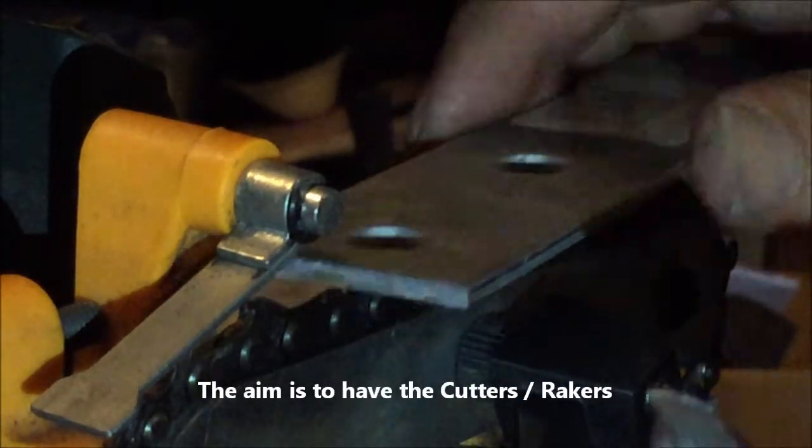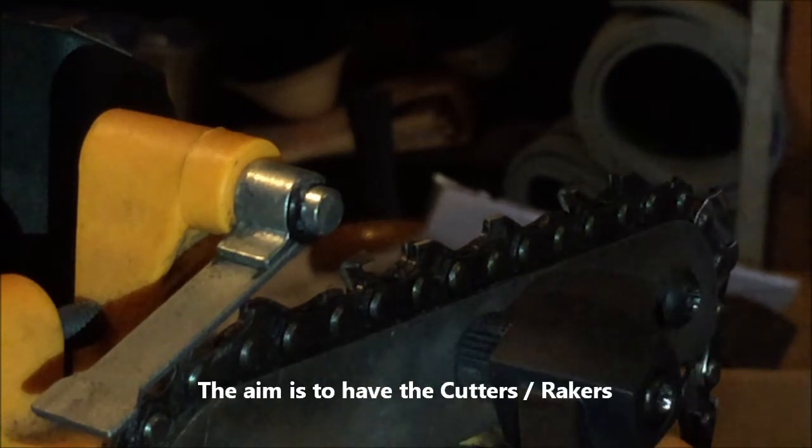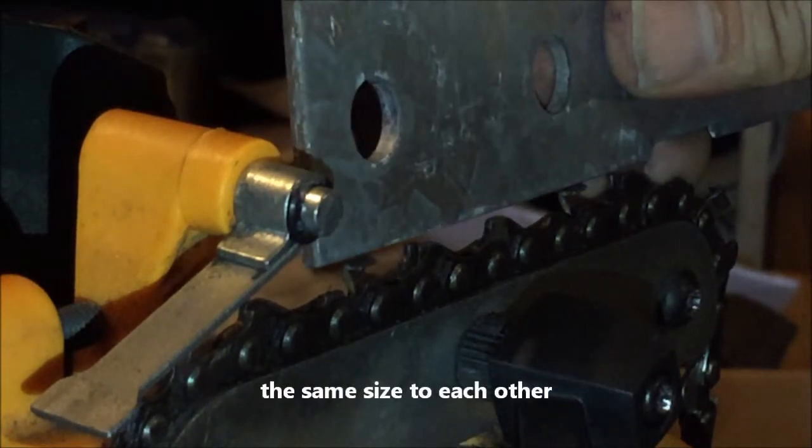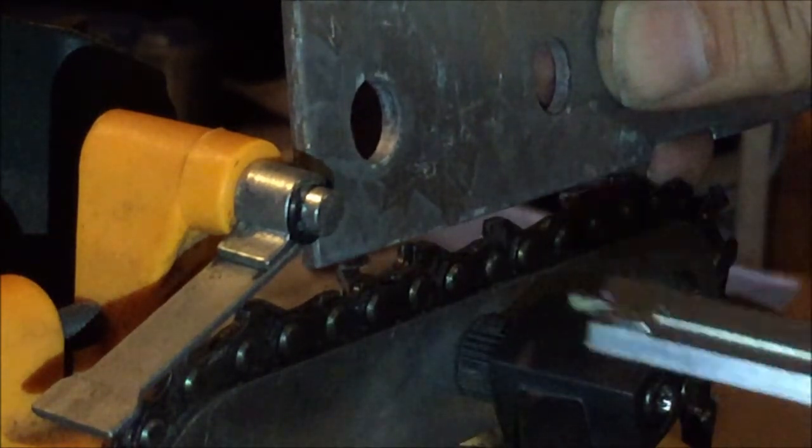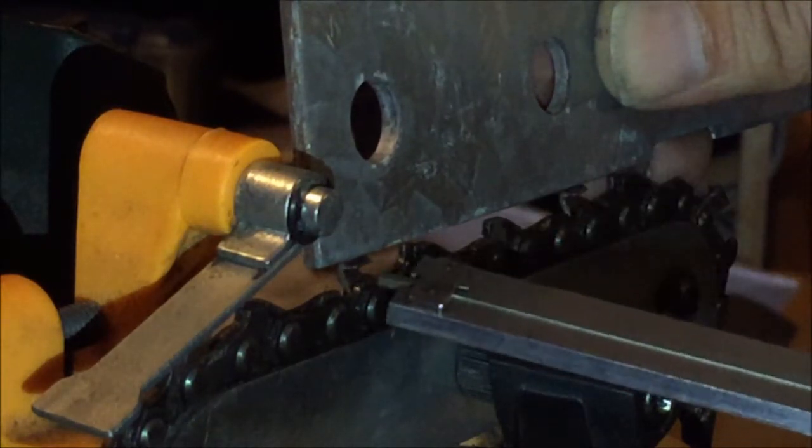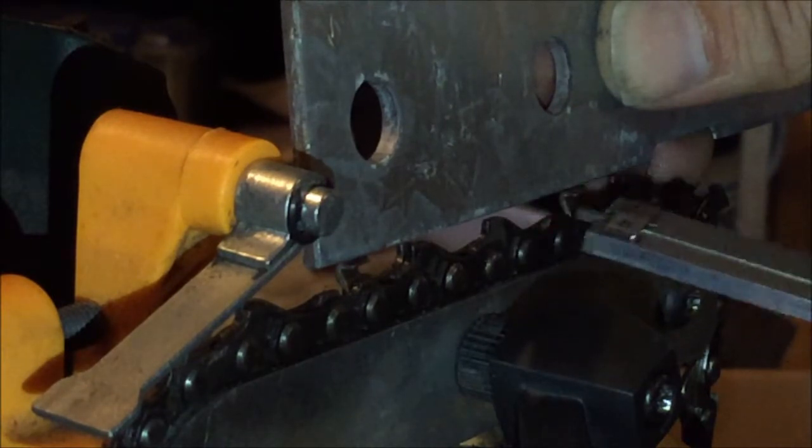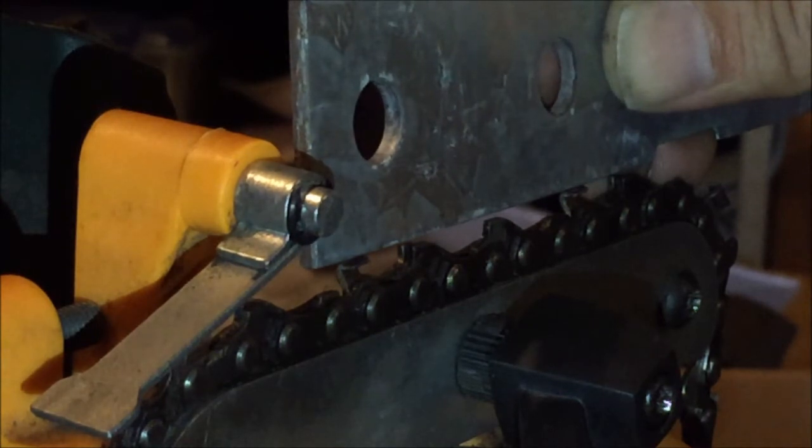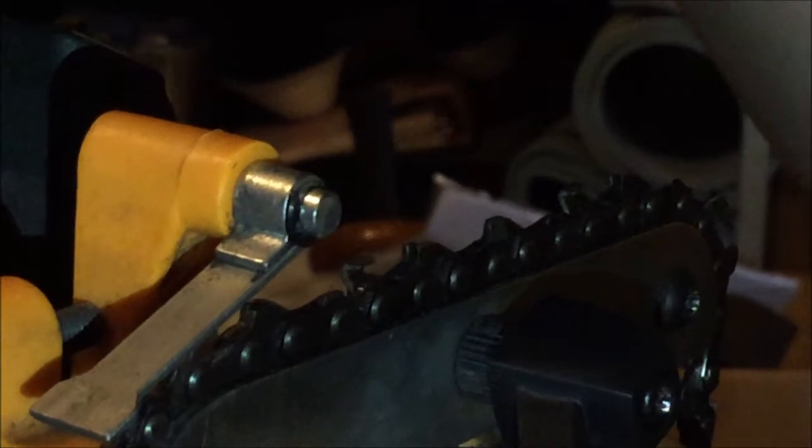At 0.5, if we look at it like that, we'll see this straight line. It's sitting on top of the cutters, and we just want that 0.5mm gap on the raker, which is just about right. Turn it on.